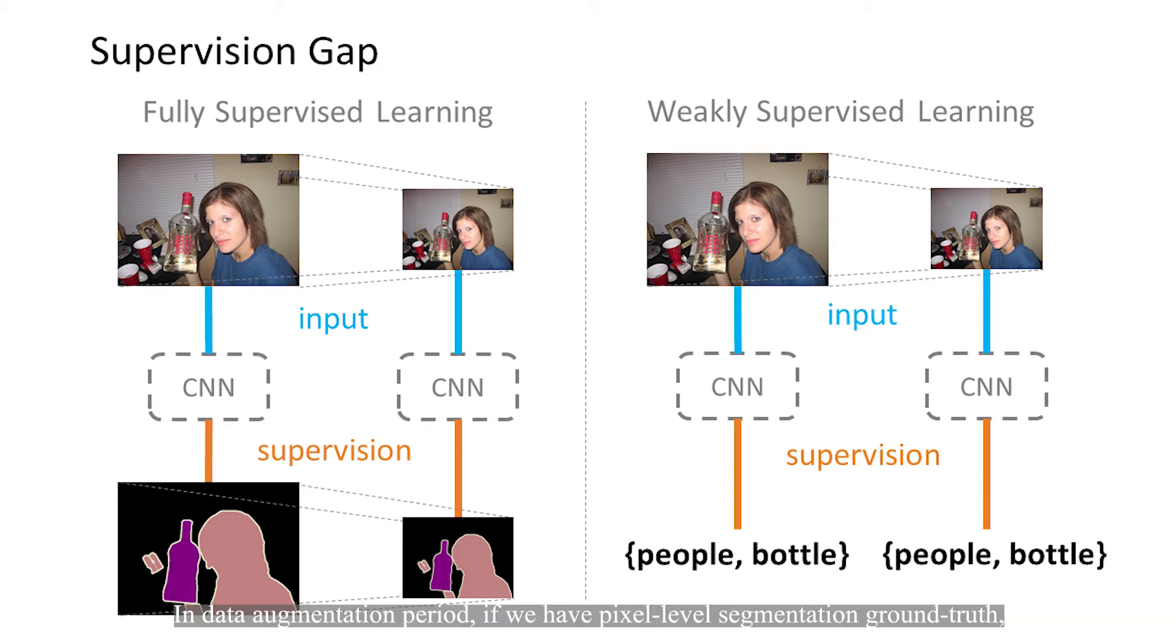In data augmentation period, if we have pixel-level segmentation ground truth, they will be applied the same augmentation with the input images. However, when we only have classification labels, there is no consistency constraint during image augmentation, which causes the inconsistency of predicted CAMs.